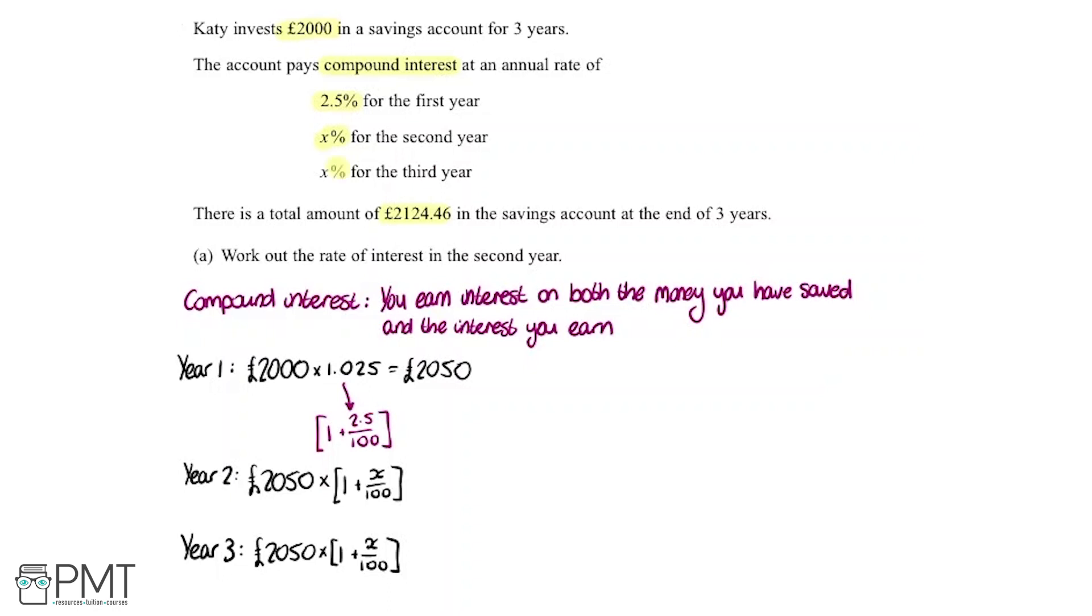Then we're told in the question, again, it's x% interest for the third year. So the same as last time, on top of our starting point here, we're going to multiply that by 1 plus our interest, so x% over 100.